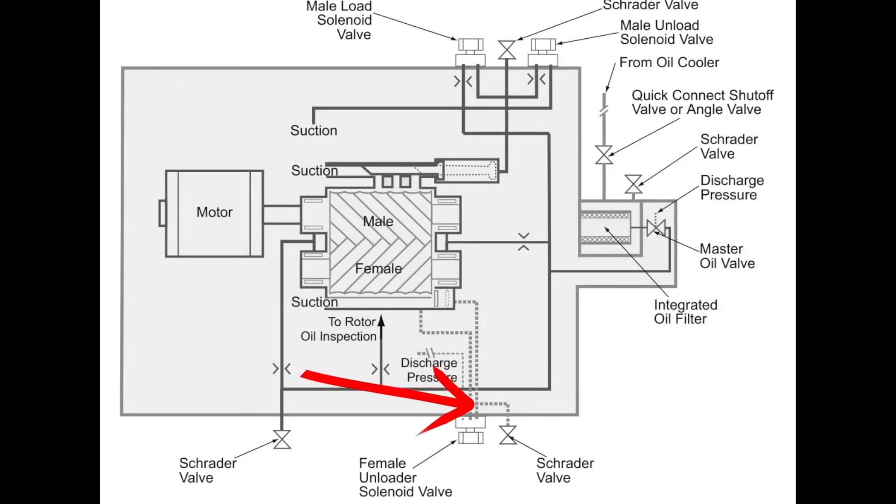So let's start with the female unloader. A female unloader is used at the startup cycle. So when the compressor is first started up, the female unloader is de-energized. This valve here is allowed to move, and we can bypass discharge gas back to suction.